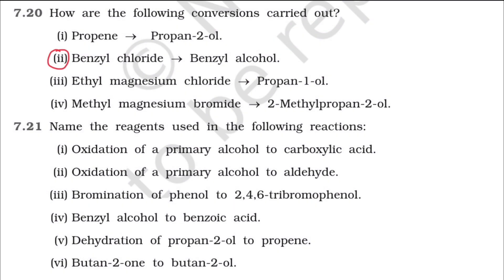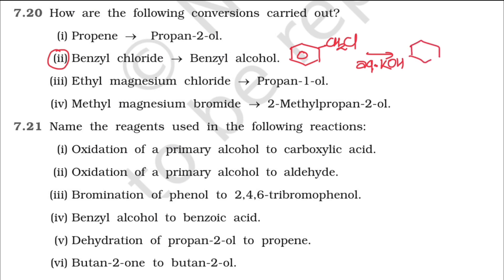Benzyl chloride to benzyl alcohol. Benzyl chloride is benzene with CH2Cl. When you treat this with aqueous KOH, you are going for a nucleophilic substitution reaction — Cl is replaced by OH — giving benzyl alcohol. Very simple conversion.